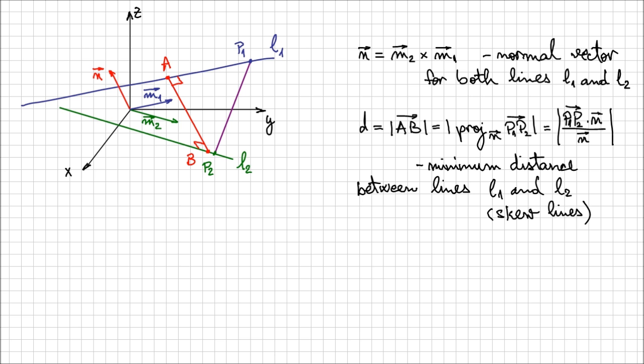That's how you determine the minimum distance between two skew lines. Hopefully this will help you a lot in solving problems where you need to analyze the relation between two lines. With this I'm going to conclude the lesson. Thanks for watching.